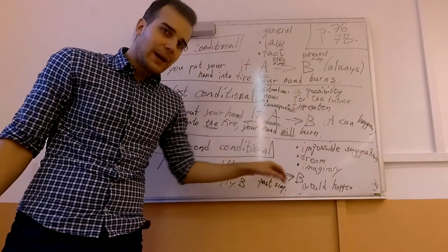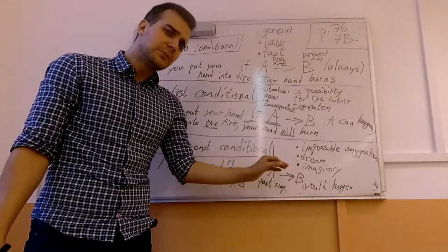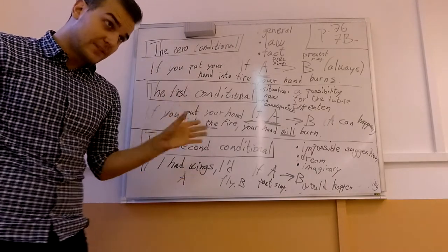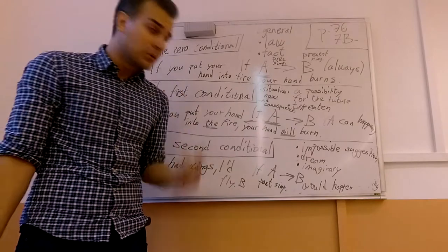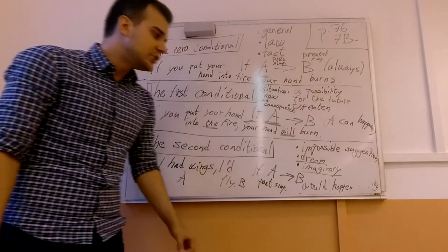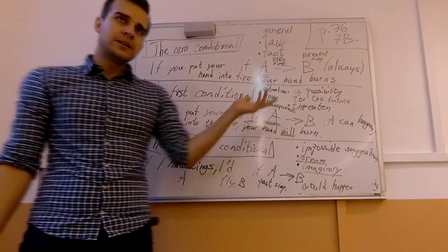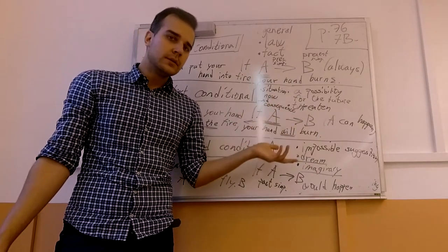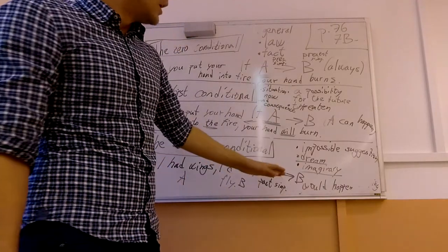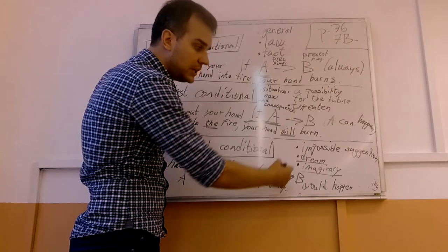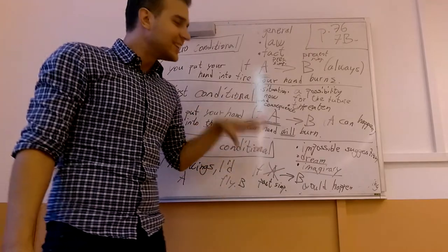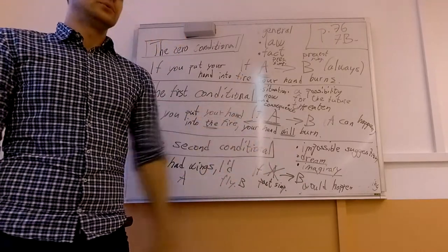I'm saying: if A happened, then B would happen. But A cannot happen. Same idea: if I was a woman, I would have children — these kinds of things. You're saying that if A happened, B would happen as a result, but A cannot happen. It is very unlikely that B will happen to you. So this is a situation I can't change — I'm dreaming.